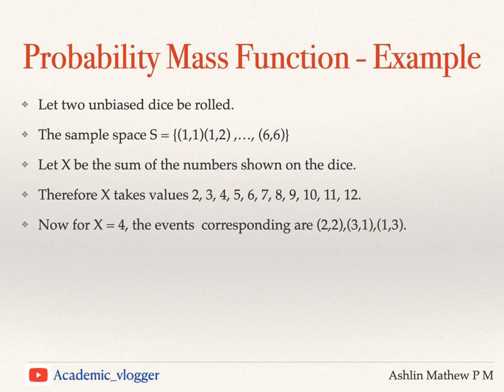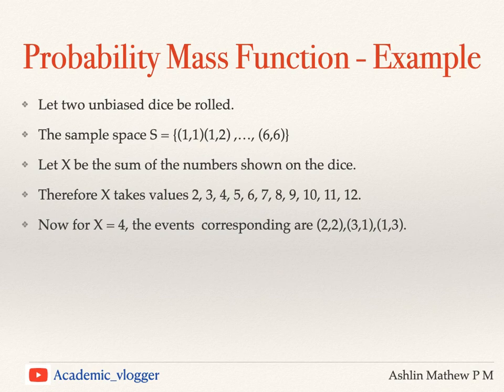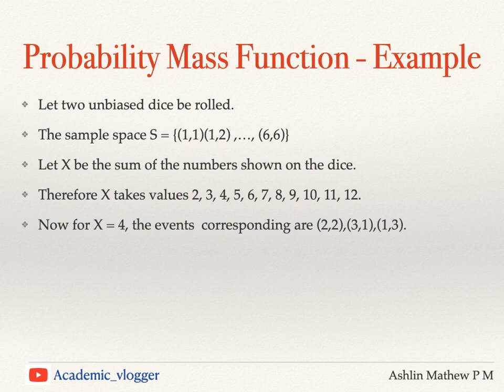Now, for example, if we consider what is the probability corresponding to X = 4: we know X takes values from 2 to 12. We will get X = 4 in three cases or three events of the sample space — where the first die shows 2 and the second die shows 2, giving sum 4; next is (3,1); and the next is (1,3). So these are the 3 cases which contribute to X = 4.